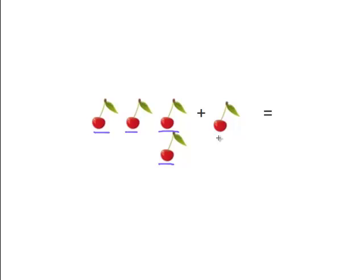Okay, and now let's add this one cherry. So four cherries plus one cherry equals five cherries.